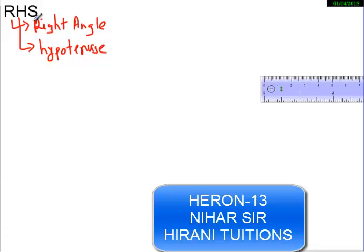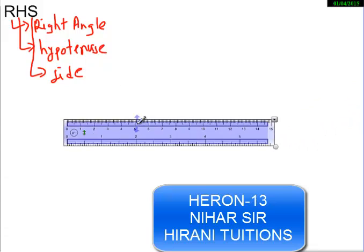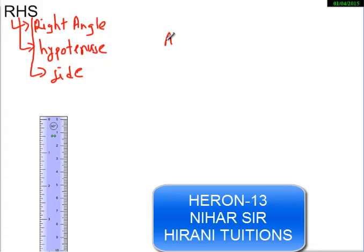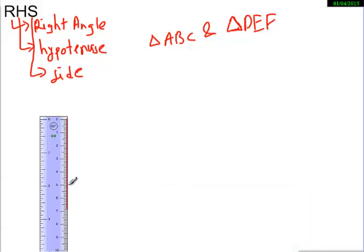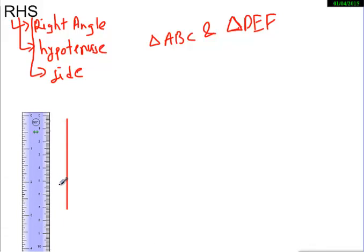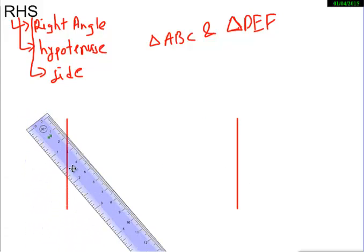S stands for side. So I am drawing two triangles: triangle ABC and triangle DEF. Let me draw that. So in one triangle, one side is around seven centimeters, and in the second triangle, the excited one is also seven centimeters. I kept it here. Now I am drawing a right angle in both triangles.